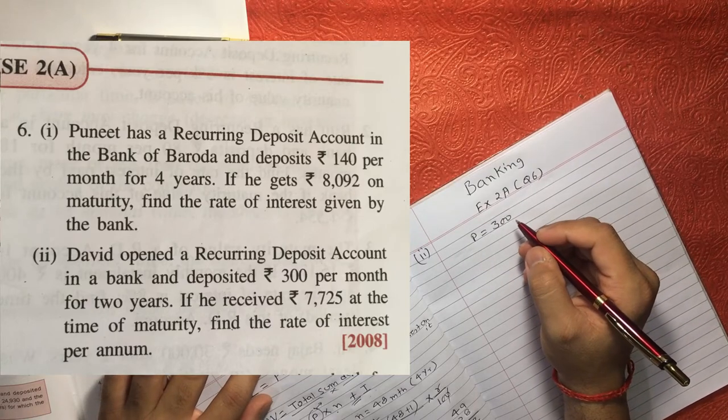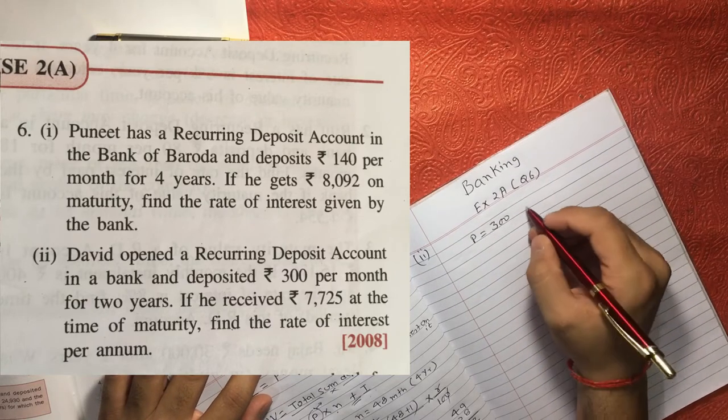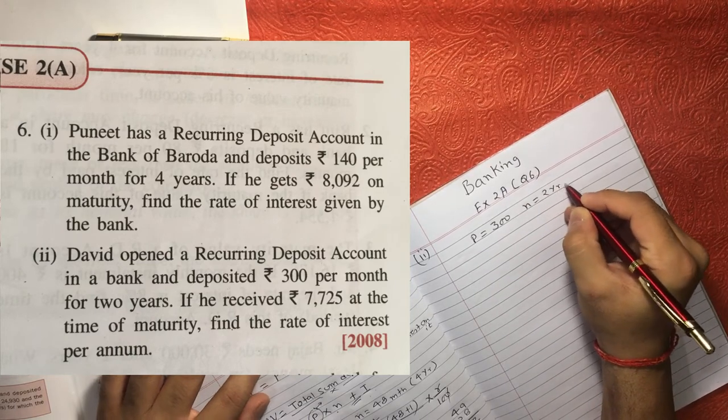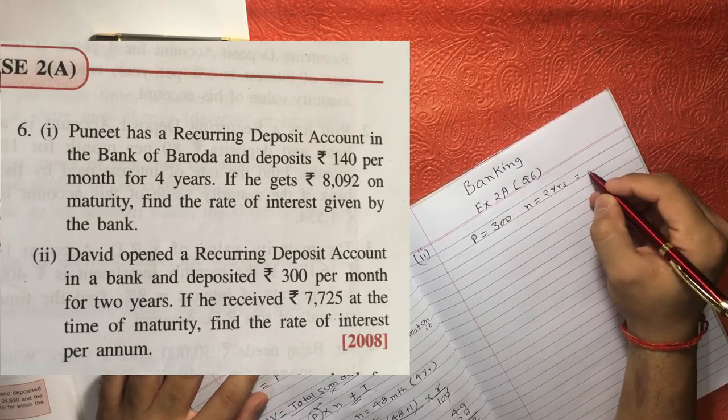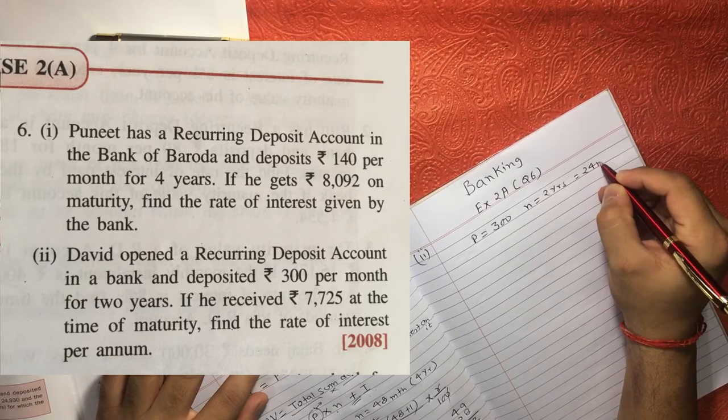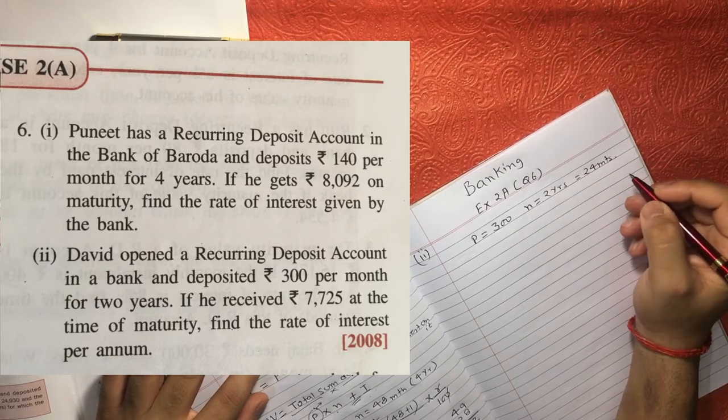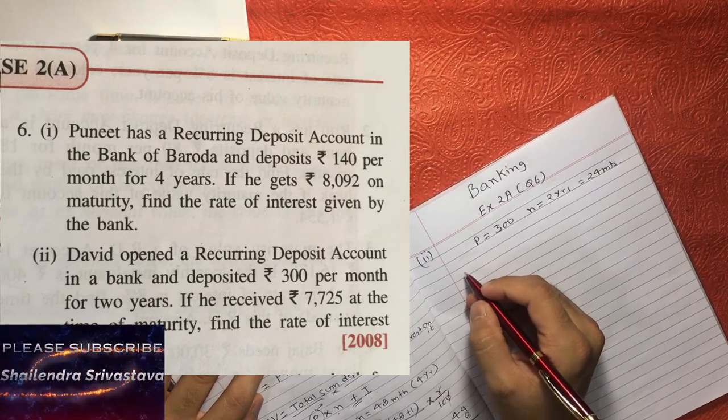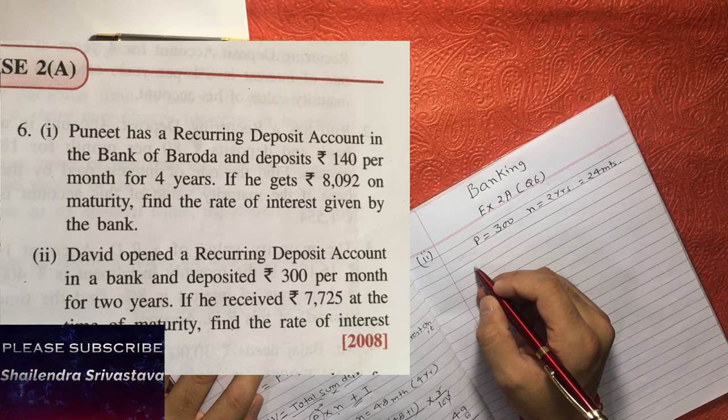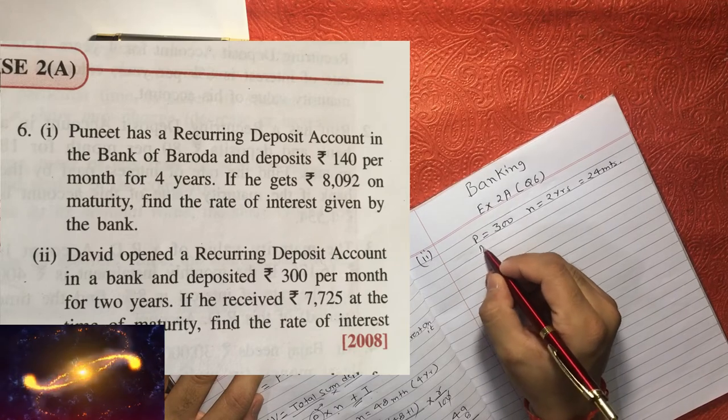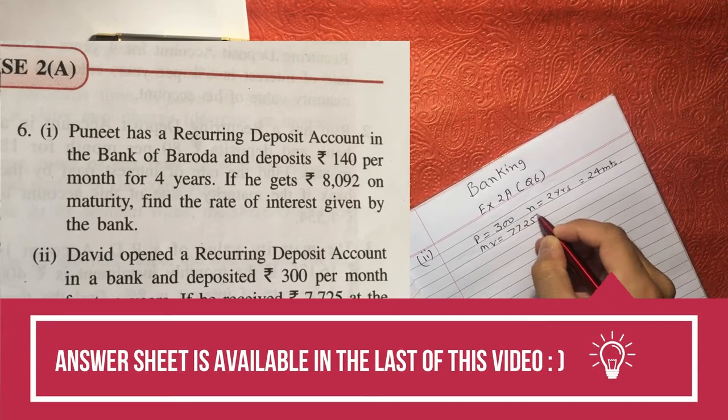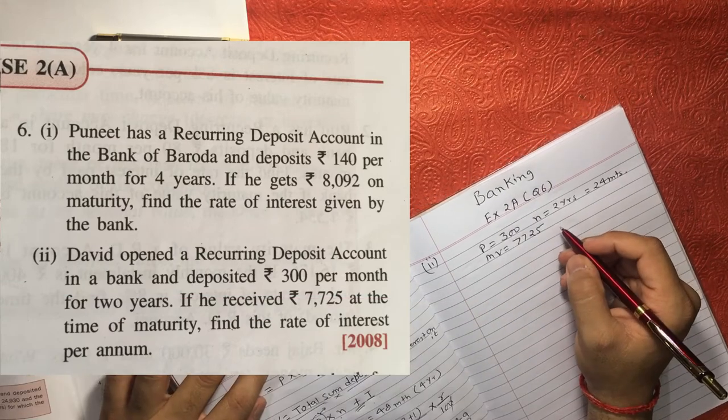Now he is saying per month for 2 years. That means N. N is what? 2 years, that means 24 months. Now he is saying if he received Rs. 7725 at the time of maturity, that means maturity value is what? 7725. Then find the rate of interest.